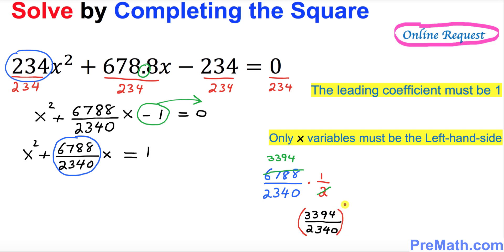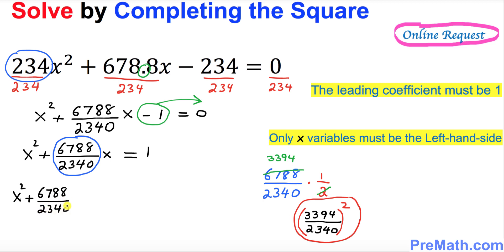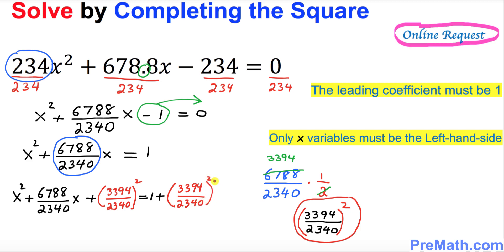Whatever quantity you got, you must square it and add it to both sides of the equation. So we write: x squared plus 6788 divided by 2340 times x, plus 3394 over 2340 squared, equals 1 plus 3394 over 2340 squared — adding the same quantity on both sides.